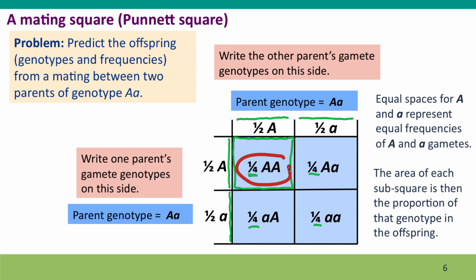Now I've written in the proportions of each combination that's been produced. You can see that we have one quarter AA big A big A, one quarter little a little a, and two quarters of the heterozygous genotypes. So we can write out the results of the cross as one quarter big A big A, one quarter little a little a, and one half big A little a. Now here I've got big A little a, here I've got little a big A. Those are the same genotypes.